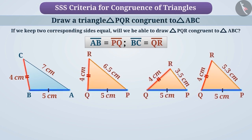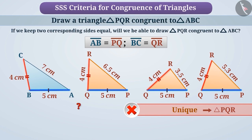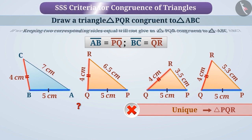But it is still not sufficient enough to form a unique triangle PQR. So we can say triangle PQR is not congruent to triangle ABC. Therefore, keeping two corresponding sides equal will not give us triangle PQR congruent to triangle ABC.